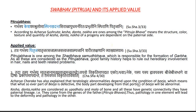Coming to the second subtopic: Svabhav and its Applied Value. According to Acharya Shushrut, there are Garvut Prattikar Bhav explained. Kesh, Nakha, and Dant are Pitruj Bhav, which means that the structure, color, texture, and quantity of Kesh and Nakha of a progeny will be dependent on the paternal side. So Kesh, Nakha, and Dant are Pitruj Bhav.